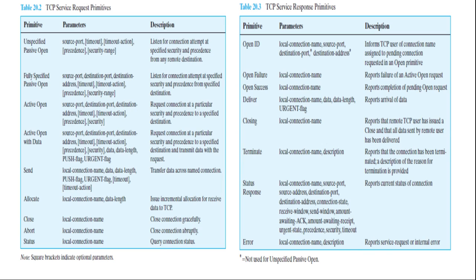TCP service request primitives are: unspecified passive open, fully specified passive open, active open, active open with data, send, allocate, close, abort, and status. You can check all the parameters and descriptions for them. TCP response primitives are: open ID, open failure, open success, deliver, closing, terminate, status response, and error. There are their parameters and descriptions also.